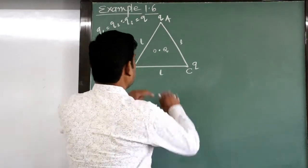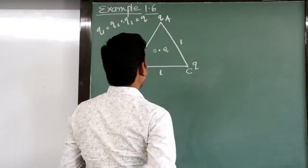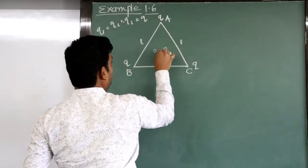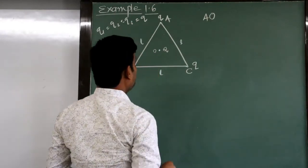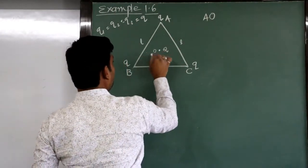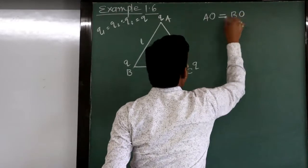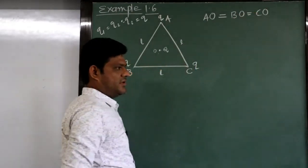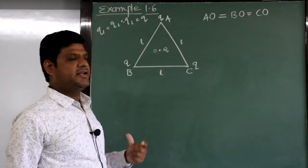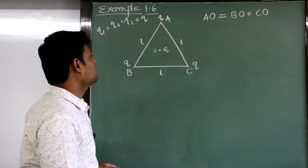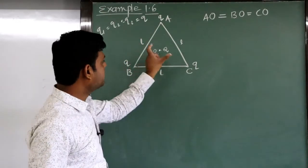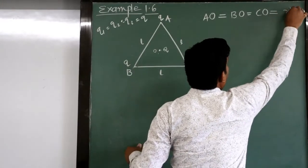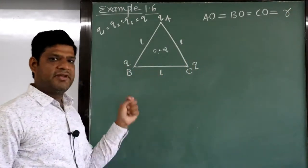The distance AO, the distance BO, and the distance CO are all the same — as we know from the geometry of the equilateral triangle. That distance we can denote by the letter small r.